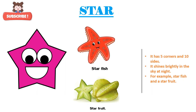The next beautiful shape that we are going to learn is a star. S-T-A-R, star. Now let's learn the properties of a star. It has five corners and ten sides. As you can see in the picture, a star has five corners and ten sides. It shines brightly in the sky at night. For example, a starfish, a starfruit, etc.